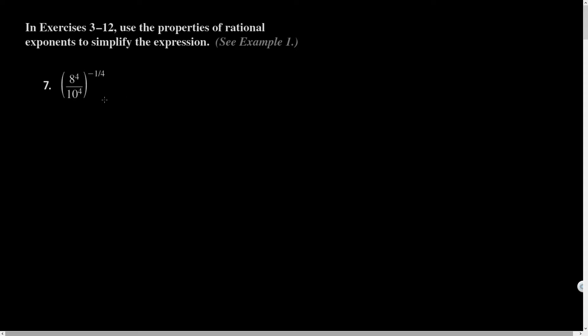So let's take a look at this question, question seven. I'm going to distribute this exponent over the division because that's allowed. And so I would get eight to the fourth times negative a fourth, all over 10 to the fourth times negative a fourth. When you're power to a power, you multiply. So here the fours cancel out, I'd get eight to the negative one over 10 to the negative one.